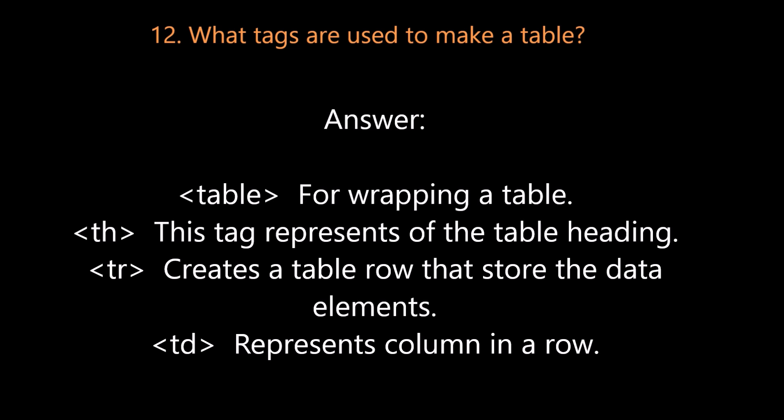Question number twelve: What tags are used to make a table? The table tag is used for wrapping a table. The TH tag represents the table heading. The TR tag creates a table row that stores data elements. The TD tag represents a column in a row.